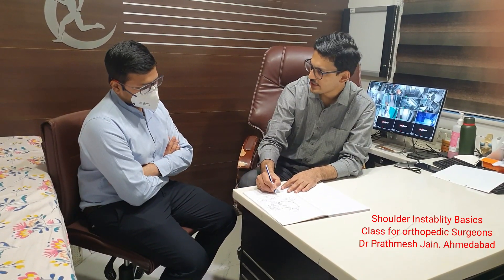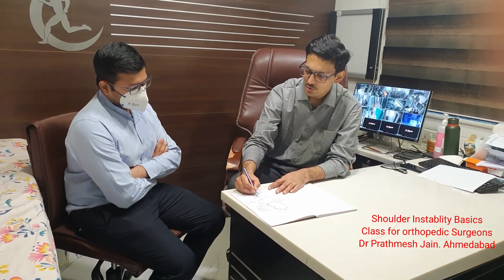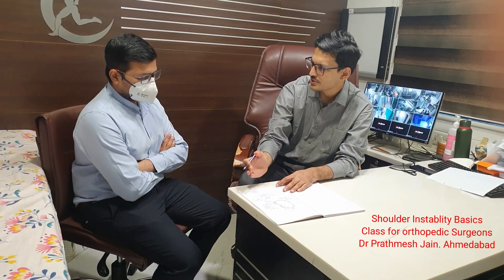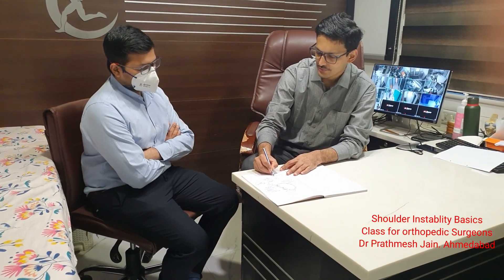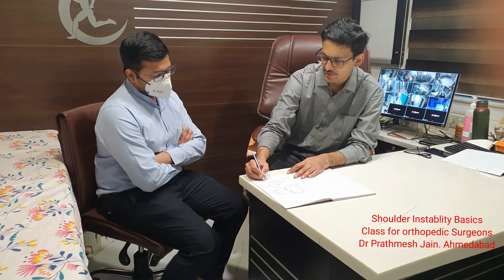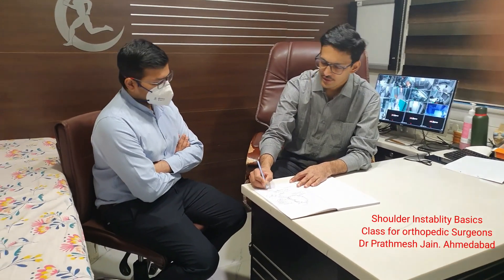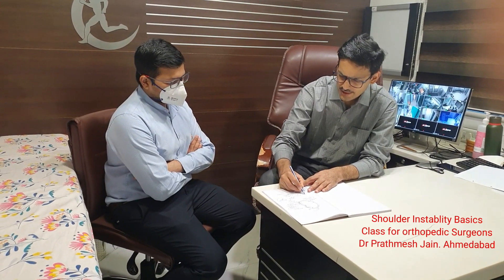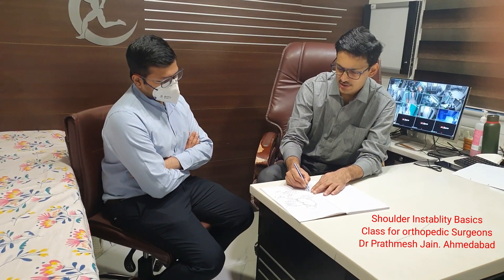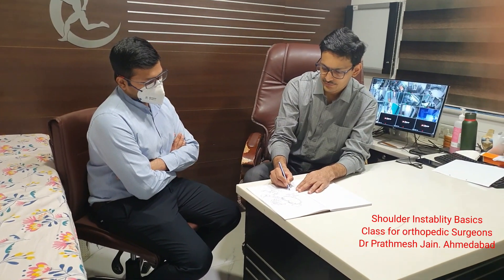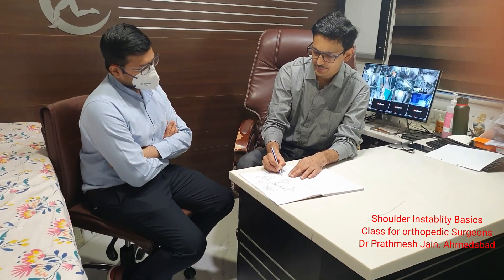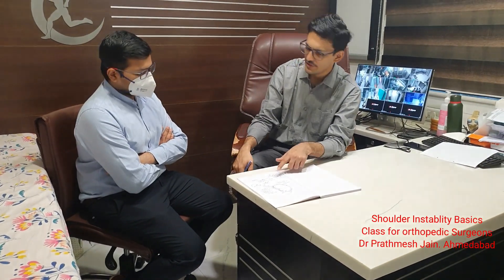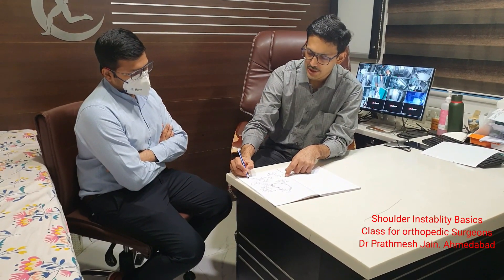If there is a bone loss which is more than 20 percent, then you need to do a bone block procedure. The most commonly done bone block procedures are Latarjet and ICBG — iliac crest bone graft. Latarjet is advantageous because it has a sling effect. It has three mechanisms of action: sling effect, bone graft, and capsular effect. ICBG provides only bone graft.